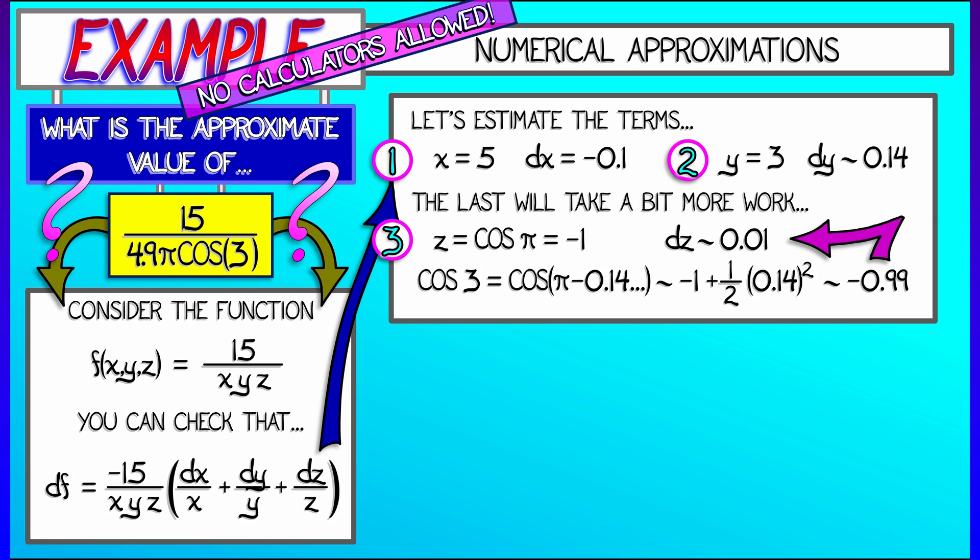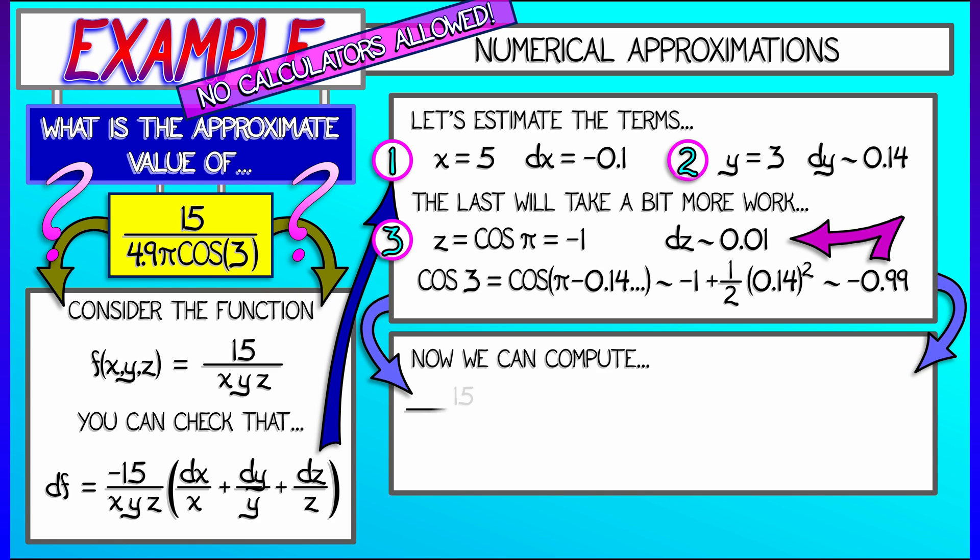Now, this isn't exact, but look, we're approximating. This is going to be fine. Now, insert all these values into the differential expression that we got, and we will estimate 15 over 4.9 pi cosine 3 as being roughly 15 divided by xyz, 5 times 3 times negative 1, plus that same thing times quantity dx over x plus dy over y plus dz over z. That is minus 0.1 over 5, plus 0.14 over 3, plus 0.01 over negative 1.